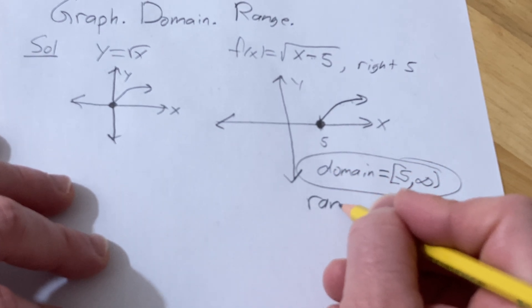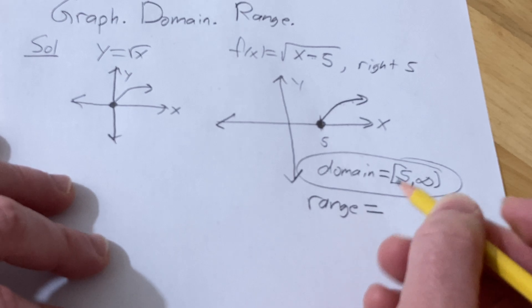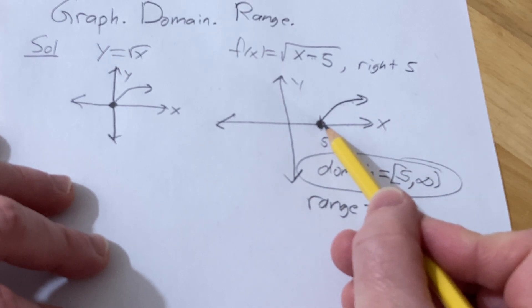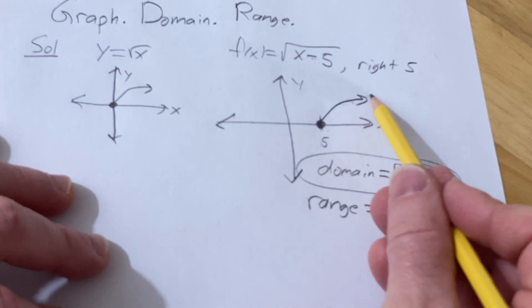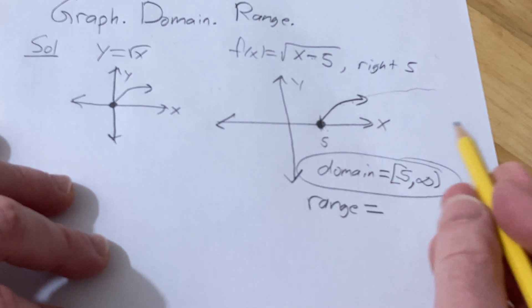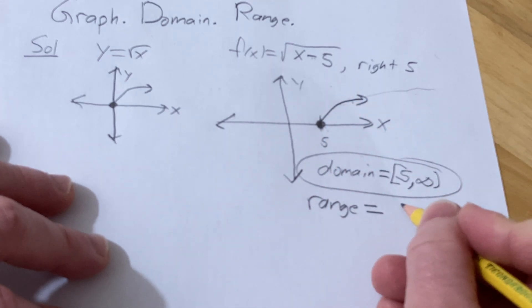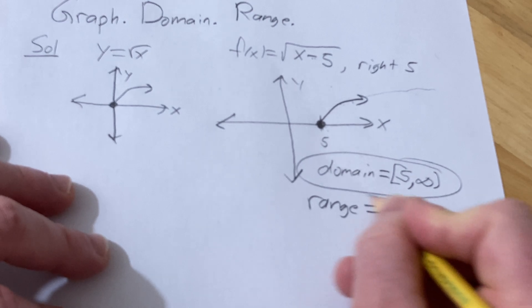As far as the range, the range has all the possible y values. The smallest y value in this case is 0. And then this does go up forever, right? It just goes up slowly. So 0 to infinity would be the range in this particular problem.